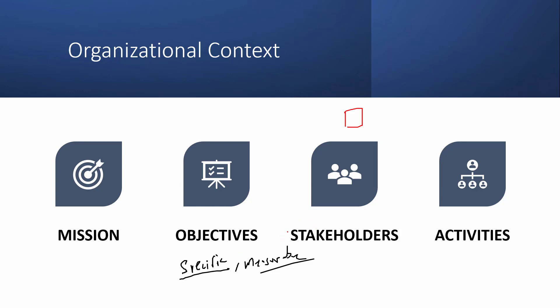Then we need to have meetings with stakeholders. Stakeholders are basically called interested parties — individuals or entities that have an interest in the organization. This could include shareholders, employees, customers, suppliers, and even the community at large. Last is activity — the primary tasks or actions the organization undertakes to achieve its mission and objectives. These are the four perspectives of organization context.